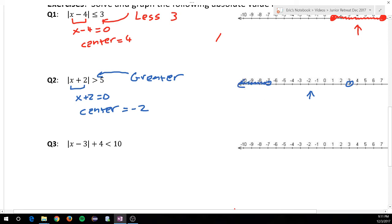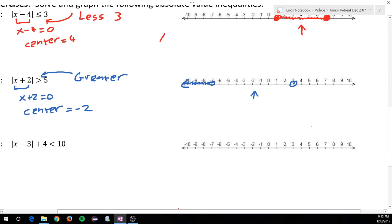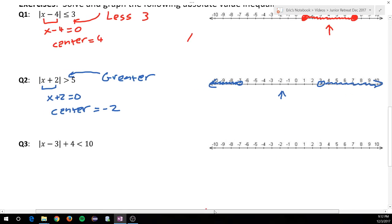Now, if my absolute value is greater, that means I want to push away. I could be 6 away, 7 away, 100 away. I've got to stay away from this center number. And there you have it. Our second absolute value inequality.